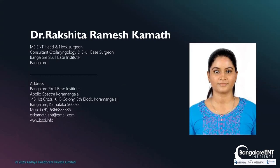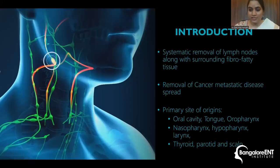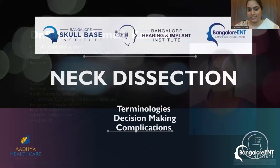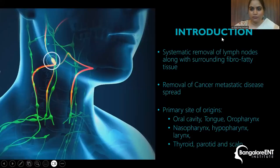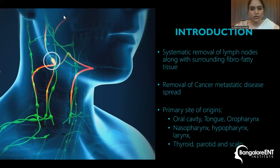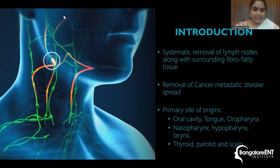Today we'll be talking about neck dissection terminologies, decision making, and complications. Neck dissection is the systematic removal of lymph nodes along with surrounding fibro-fatty tissue. The aim is removal of metastatic cancer spread. Primary sites of origin are usually the oral cavity, tongue, oropharynx, nasopharynx, hypopharynx, larynx, and sometimes the thyroid, parotid, and scalp.